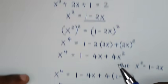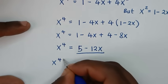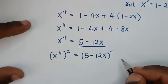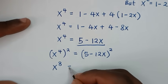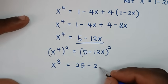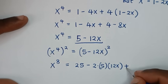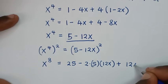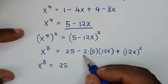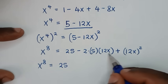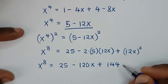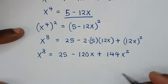Now from x to the power of 4 equals 5 minus 12x, to get to x to the power of 8 we square both sides. So x to the power of 4 squared equals 5 minus 12x squared, giving x to the power of 8 equals 25 minus 2 times 5 times 12x plus 144x squared. That is x to the power of 8 equals 25 minus 120x plus 144x squared.